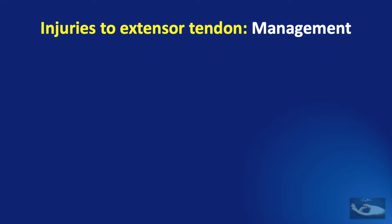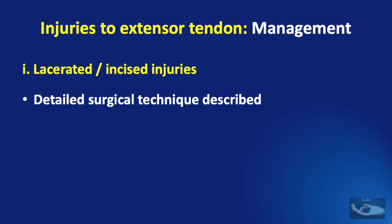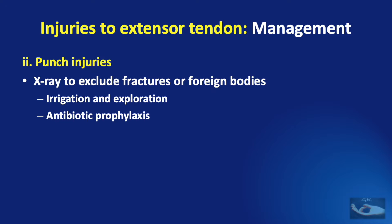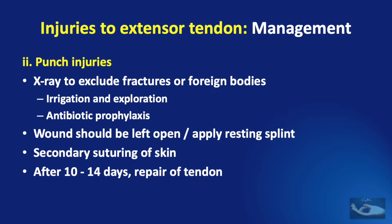The management of such an injury depends on the type of wound — whether it is a lacerated or incised wound, a punch injury, or an injury with loss of skin or tendon. When it is a lacerated or incised wound causing an injury to the extensor tendon in zone 5, the detailed surgical technique is described further on in this video. In a punch or fight-bite injury, there tends to be a lot of biological contamination. After an x-ray to exclude fractures or foreign bodies, good irrigation and exploration of the wound needs to be done. Antibiotic prophylaxis needs to be started and the wound left open with only a resting splint applied. Once the infection reduces, secondary suturing of the skin needs to be done, and after 10 or 14 days, a delayed primary repair of the tendon can be done.